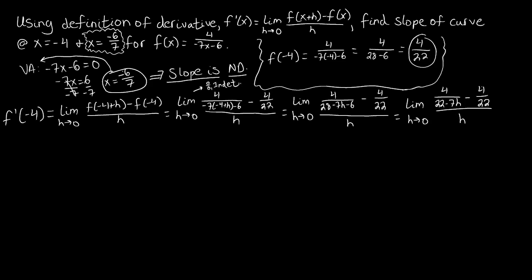We have two fractions being subtracted that don't share the same denominator. We can make them share one by multiplying the denominators together, giving LCD of 22 times 22 minus 7h. The first fraction gets multiplied by 22, and the second by 22 minus 7h. After multiplying, the first numerator becomes 4 times 22, which is 88, all over 22 times 22 minus 7h.